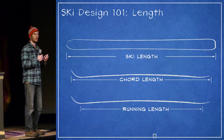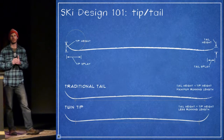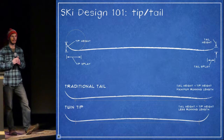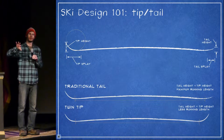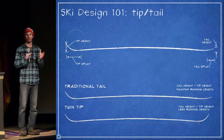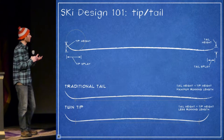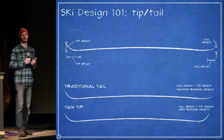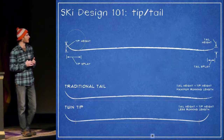A good example of this is twin tips. Twin tips were introduced in about 1998, and you can have a ski that has an upturned tail that's never going to actually touch the snow, which shortens the effective edge. Another good example of this is early rise, and that's something that we see a lot today.